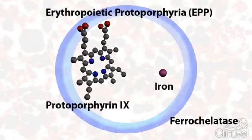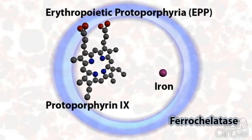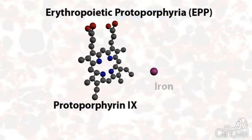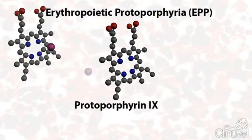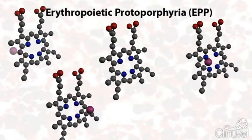In EPP patients, the ferrochelatase enzyme is either missing or deficient and this results in a build up of protoporphyrin-9 and a deficiency of haem.